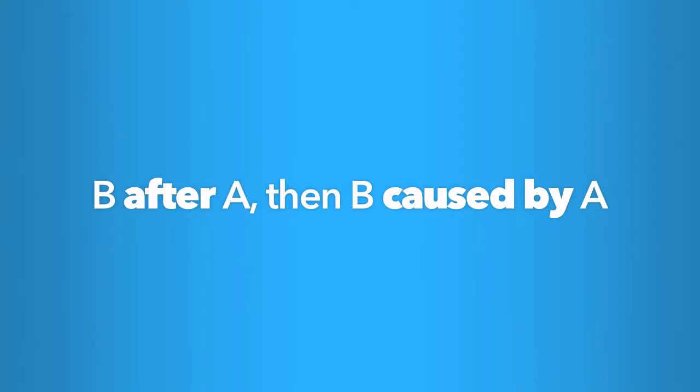The error is assuming that because B occurred after A, then B must have been caused by A. While two things occurring in sequence is consistent with the first causing the second, it's not always true. Just because two things that seem connected occur in a particular order does not mean that there is necessarily a connection or that there's a causal relationship. It's much more important that you remember why this is an error than remember the name.